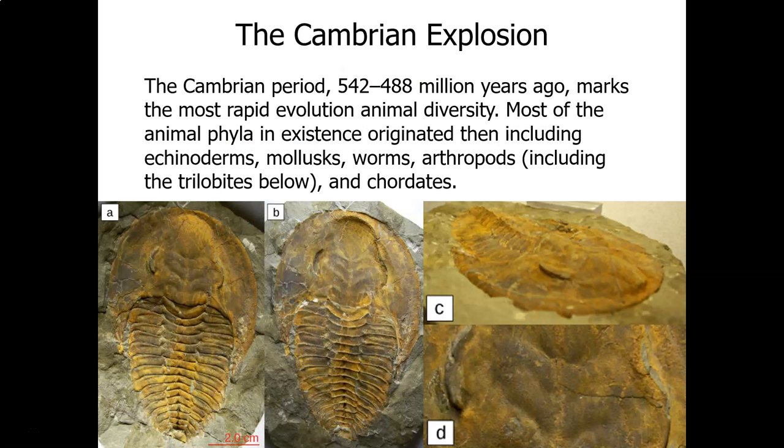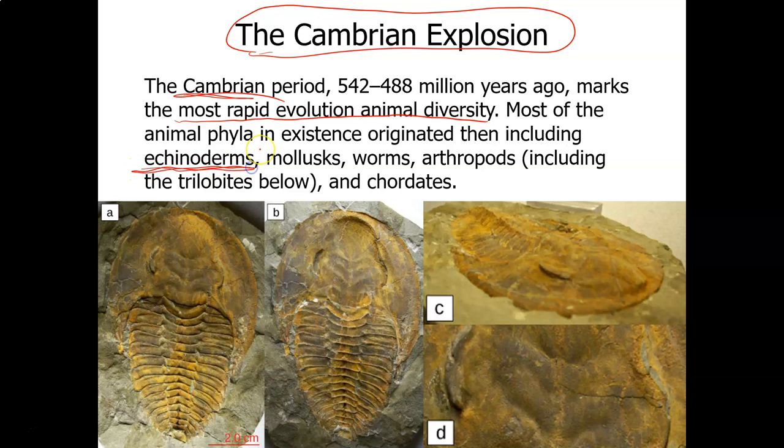And then in the Cambrian Period, between 542 and 488 million years ago, we had the most rapid evolution of animal diversity. Most of the animal phyla in existence today originated then. That includes the Echinoderms. That's why it's called the Cambrian Explosion. That includes the Echinoderms, or spiny-skinned organisms, like the sea star and the sea urchin.